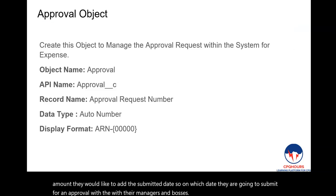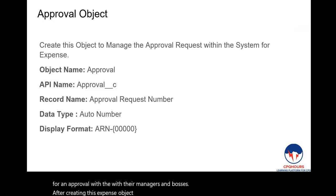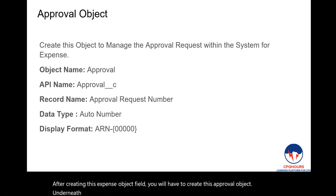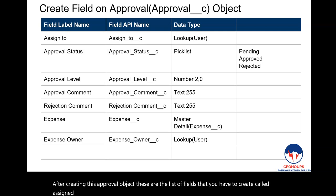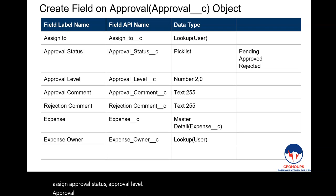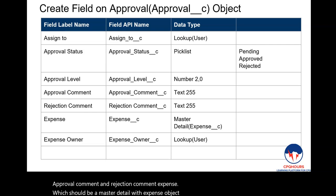After creating the Expense object fields, you will need to create an Approval object associated with the Expense object. These are the fields to create on the Approval object: Assign To, Approval Status, Approval Level, Approval Comment, Rejection Comment, Expense (which should be a Master-Detail relationship with the Expense object), and Expense Owner (which should be a lookup).